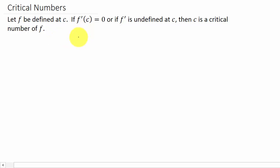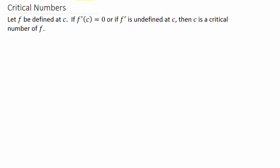Basically all this means is we find the derivative of the function, set it equal to 0, and solve for x — those are your critical numbers. Critical numbers are also where the derivative is undefined, as long as that number is in the domain of f, the function.